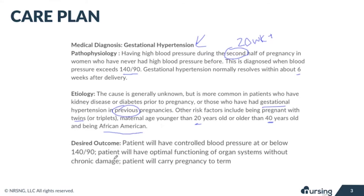Our desired outcome is that these patients will have a controlled blood pressure at or below 140 over 90. This will help achieve optimal functioning of the organ systems — we won't cause kidney damage if we can get blood pressures in a good range. We want to see good kidney function, good organ function, and then the patient will hopefully carry the pregnancy as close to term as possible.